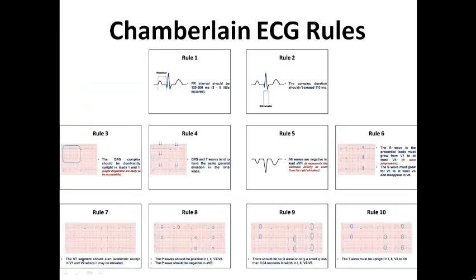So at the end we have 10 Chamberlain ECG rules. As a summary, rule number one checks the PR interval. Rule number two checks the complex duration. Rule number three checks the complex polarity in lead 1, lead 2. Rule number four checks that QRS and T-waves have the same general direction in limb leads. Rule number five checks AVR. Rule number six checks the R-wave progression. Rule number seven checks the ST segment. Rule number eight checks the P-waves. Rule number nine checks presence or absence of small Q-waves. And rule number ten checks the T-wave polarity in lead 1, 2, V2 to V6.